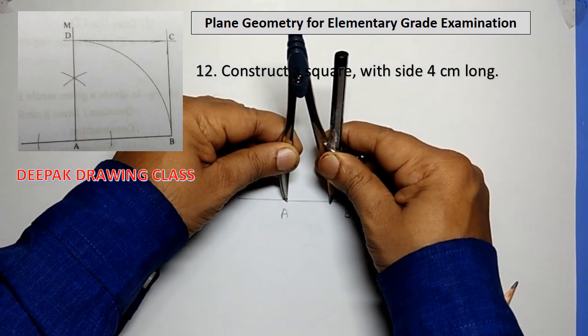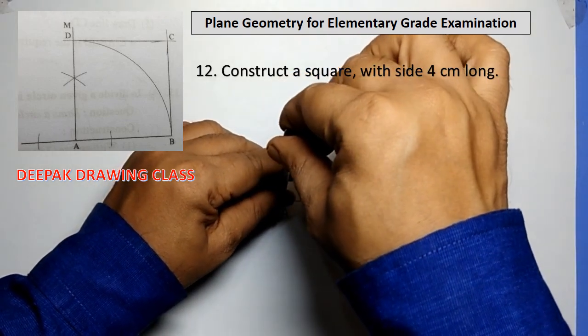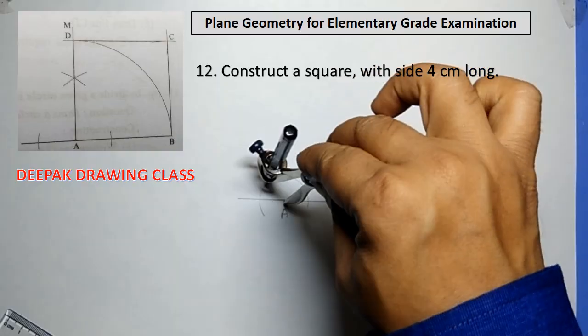Then, take a compass and with center A and any suitable radius, draw a semicircle arc intersecting the given line.